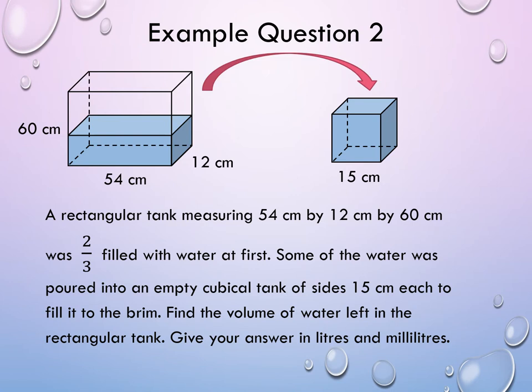Let's look at example question 2. A rectangular tank measuring 54 centimeters by 12 centimeters by 60 centimeters was two-thirds filled with water at first. Some of the water was poured into an empty cubical tank of size 15 centimeters each to fill it to the brim — that means fill it completely. Find the volume of water left in the rectangular tank. Give your answer in liters and milliliters.